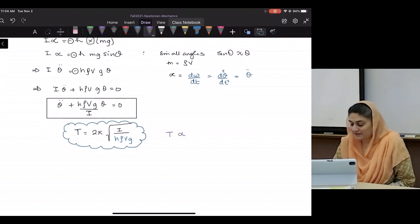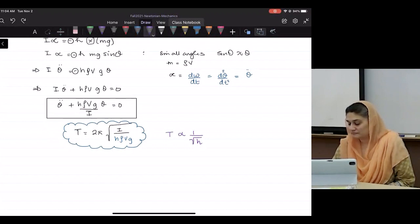Which means the period is literally a function of H. So as long as I have the H for my boat, I can calculate the roll.